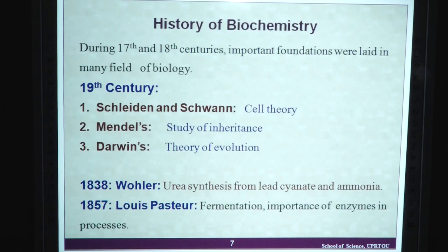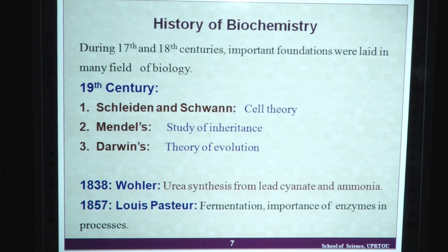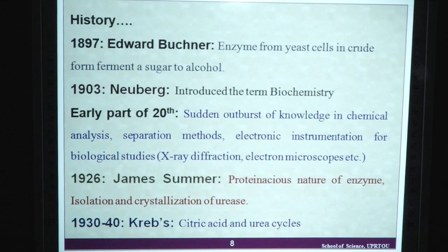This is the history of biochemistry. During the seventeenth and eighteenth centuries, important foundations were laid in many fields of biology. In the nineteenth century, Schleiden and others proposed cell theory, Mendel proposed the study of inheritance, and Darwin's theory of evolution. In the year 1838, Wohler synthesized urea using ammonium — urea was the first organic compound synthesized in the laboratory. In 1857, Louis Pasteur proposed fermentation and the importance of enzymes in different biological processes. Edward Buchner showed that enzymes from yeast cells fermented sugar to alcohol. In 1903, Neuberg introduced the term 'biochemistry'.